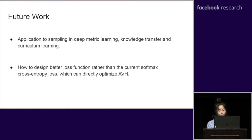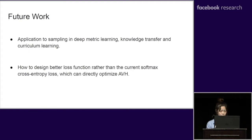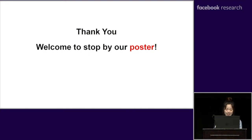For our future work, we will make use of AVH in many potential applications like deep metric learning, fairness in machine learning, knowledge transfer, and curriculum learning. Besides, designing a better loss function than softmax cross-entropy incorporating AVH remains an open problem. Thank you for attending the talk and welcome to stop by our poster for further details and insights.